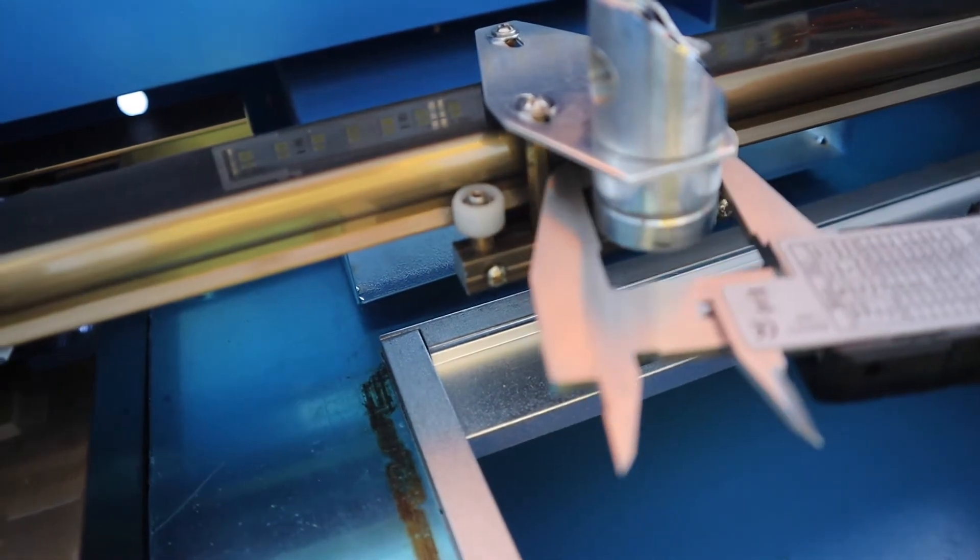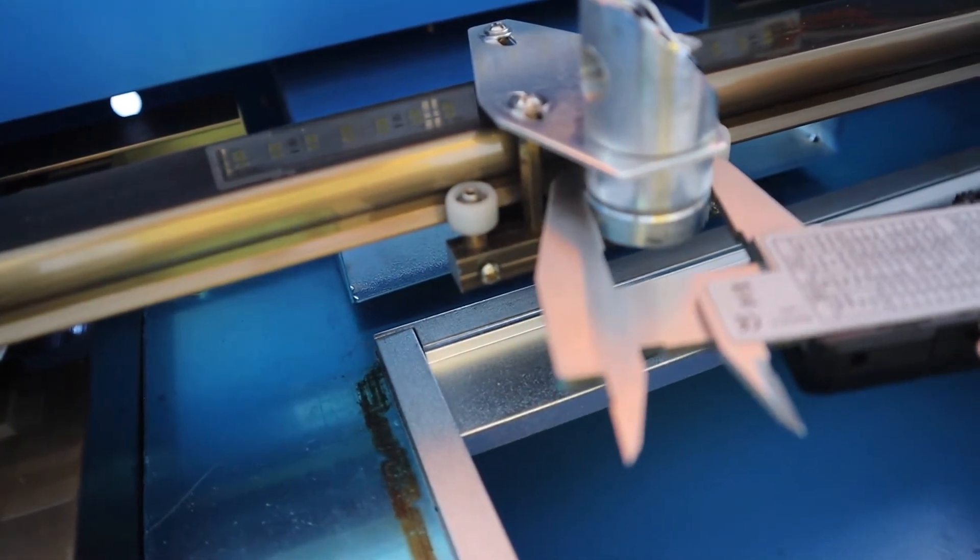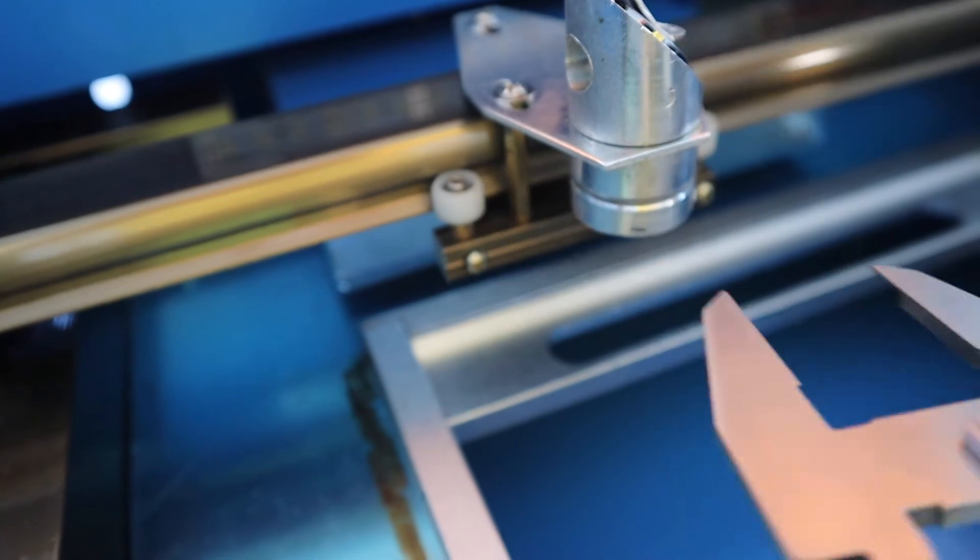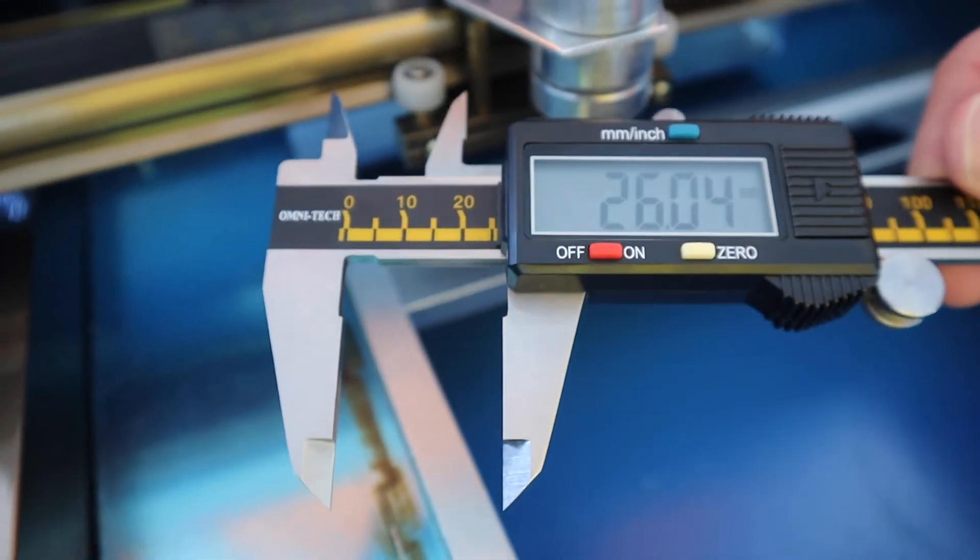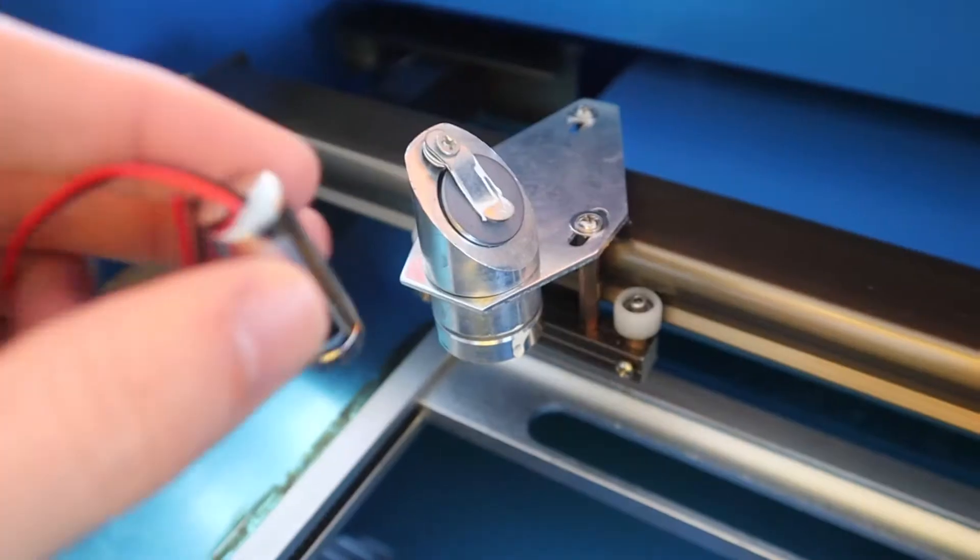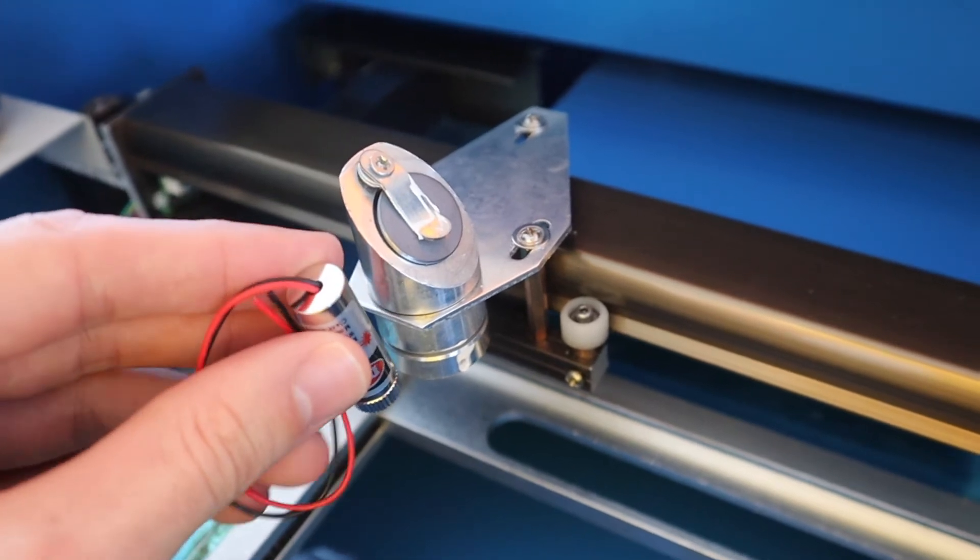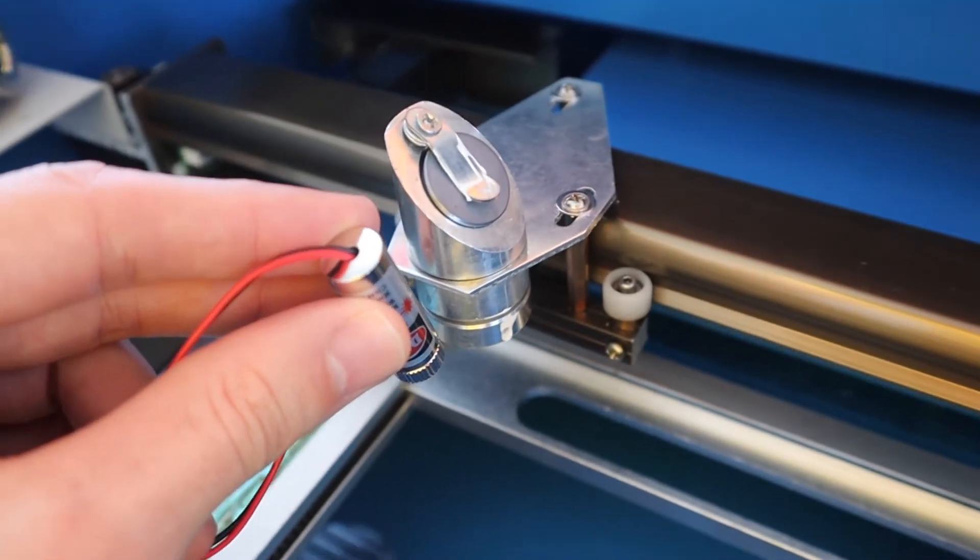I started out by measuring the head of the laser cutter in order to design a 3D printed bracket to hold the pointer. I wanted the pointer to be adjustable so that you can make changes for different thickness materials and different focal points of different lenses.